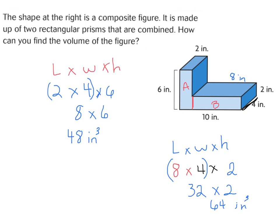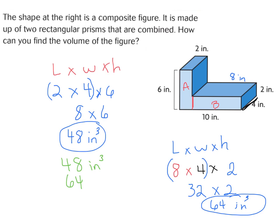Our last step is to combine our two volumes to find the full volume. So we have 48 cubic inches plus 64 cubic inches, which gives us 112 cubic inches. That's the strategy we'll be using today to solve a couple of problems. Let's go ahead and begin in our book.